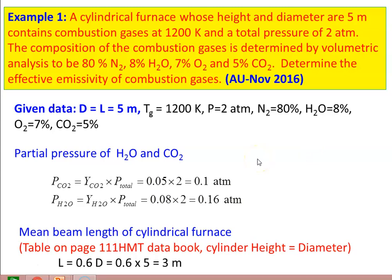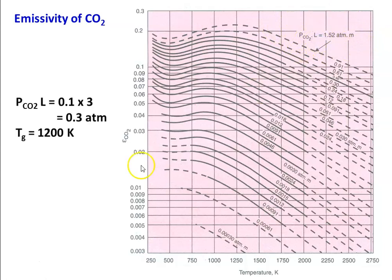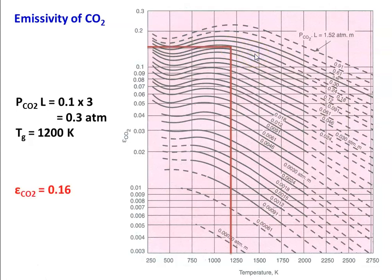Now we calculate the mean beam length of the cylindrical furnace. From the table on page 111 in the heat and mass transfer data book, for a cylinder with height equal to diameter, the beam length L = 0.6 × diameter = 0.6 × 5 = 3 meters. For the emissivity of CO2, we use the graph in the data book. The x-axis is temperature, the y-axis is ε_CO2, and the lines represent P_CO2 × L. We calculate P_CO2 × L = 0.1 × 3 = 0.3 atmosphere-meter. At gas temperature 1200 Kelvin, the emissivity of CO2 = 0.16.